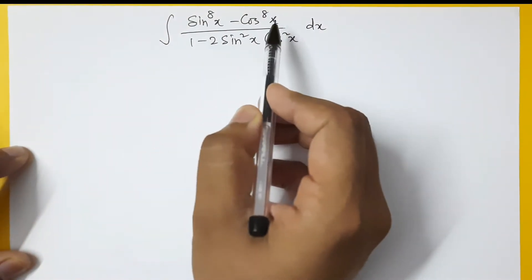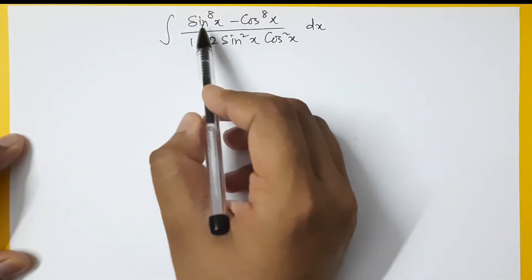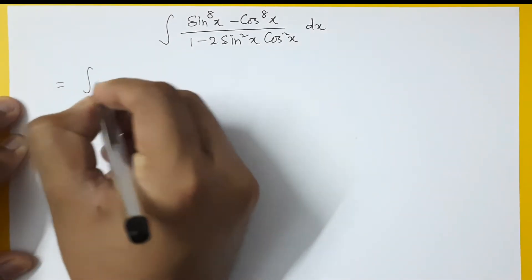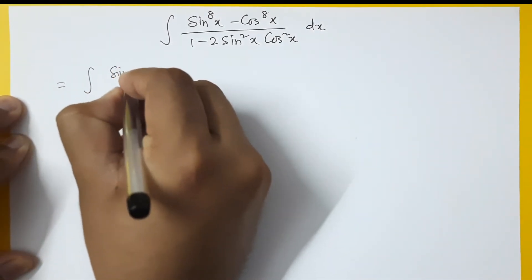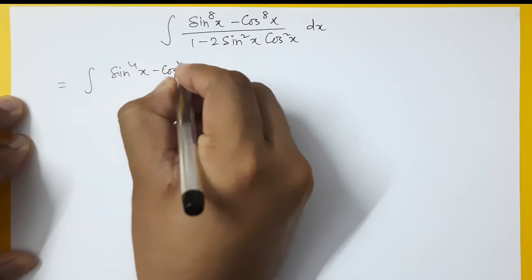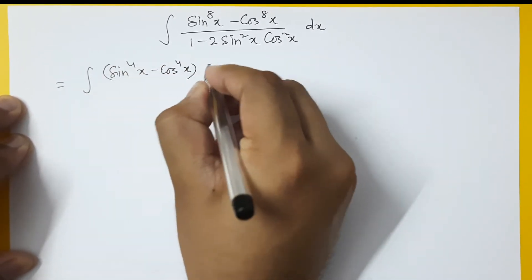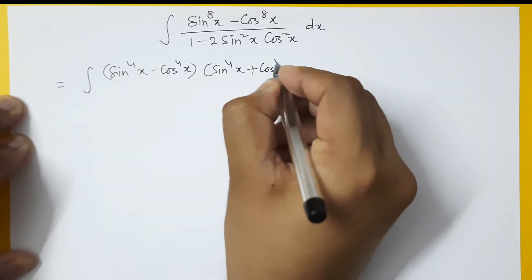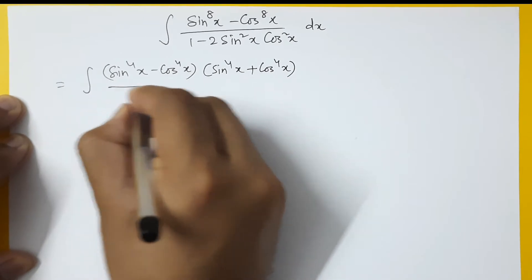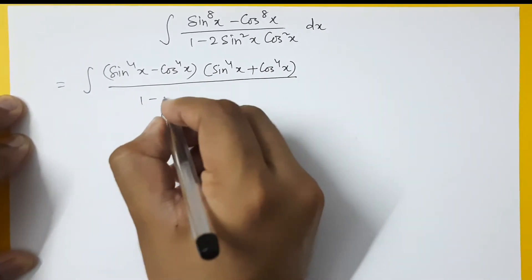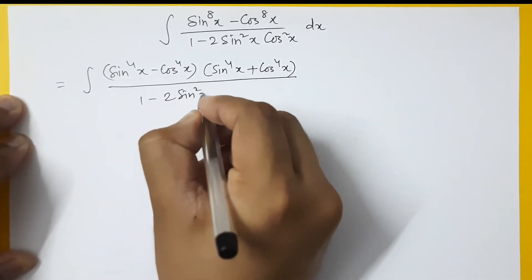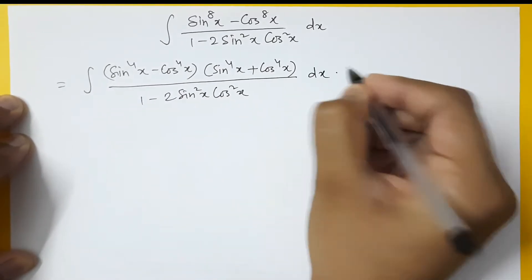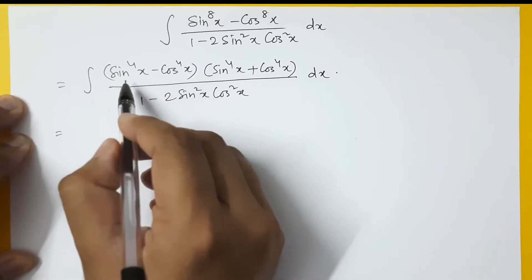Here in the numerator, you apply the formula of a² - b². So let's do that. The integration will be sin⁴x minus cos⁴x times sin⁴x plus cos⁴x, and there is the denominator and dx is there.